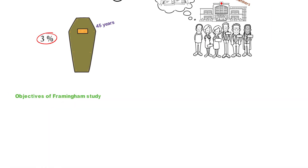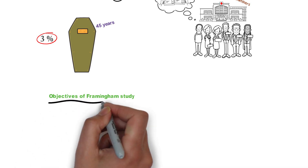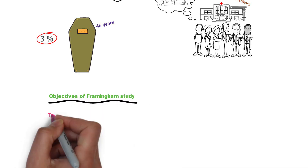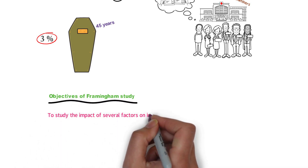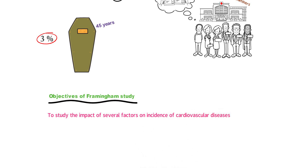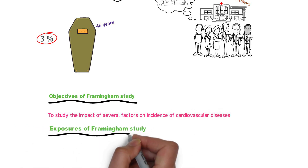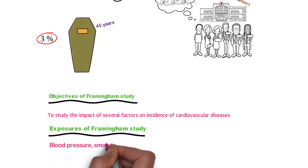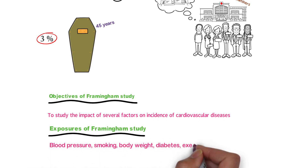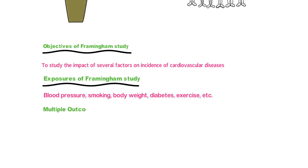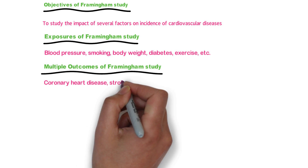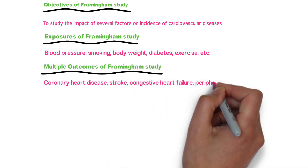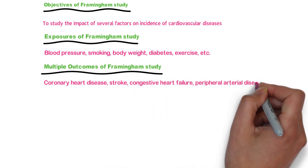Objectives of the Framingham study: to study the impact of several factors on incidence of cardiovascular diseases. Exposures of the Framingham study: blood pressure, smoking, body weight, diabetes, exercise, etc. Multiple outcomes of the Framingham study: coronary heart disease, stroke, congestive heart failure, and peripheral arterial disease.